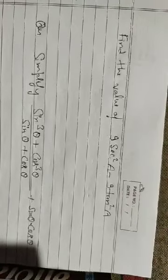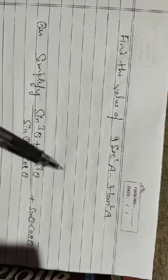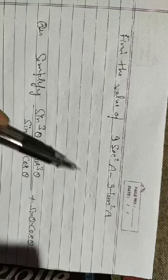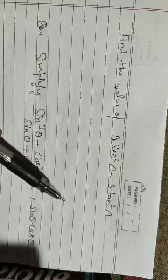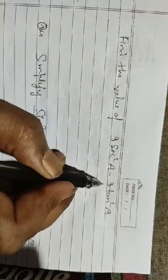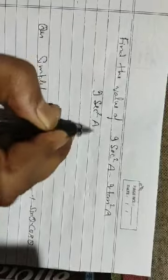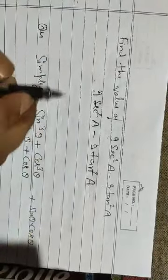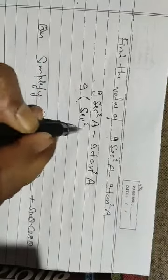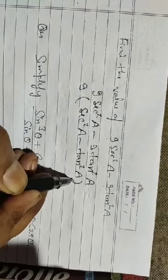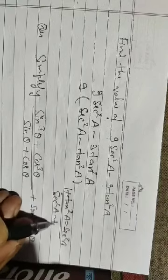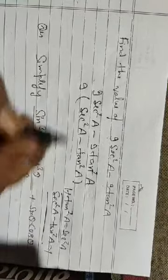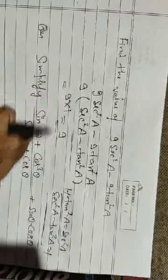Next, find the value of 9sec²a - 9tan²a. This is straightforward if you know your identity. Take 9 as common factor, giving 9(sec²a - tan²a). Using the identity 1 + tan²a = sec²a, we have sec²a - tan²a = 1. So 9 × 1 = 9.